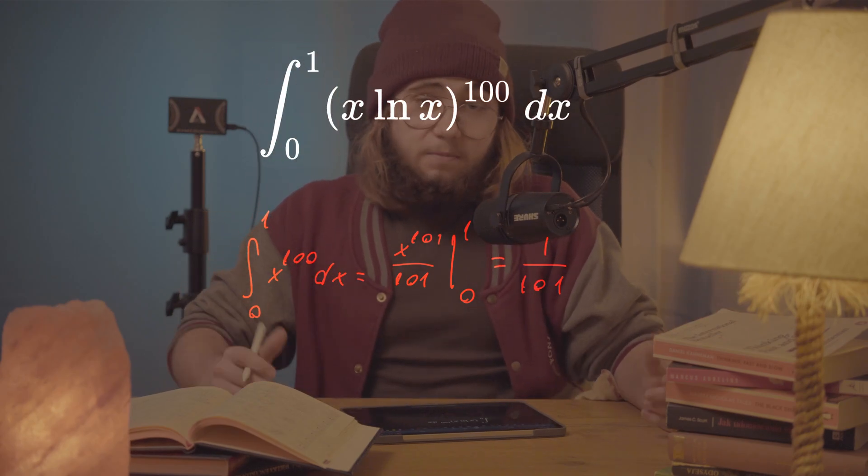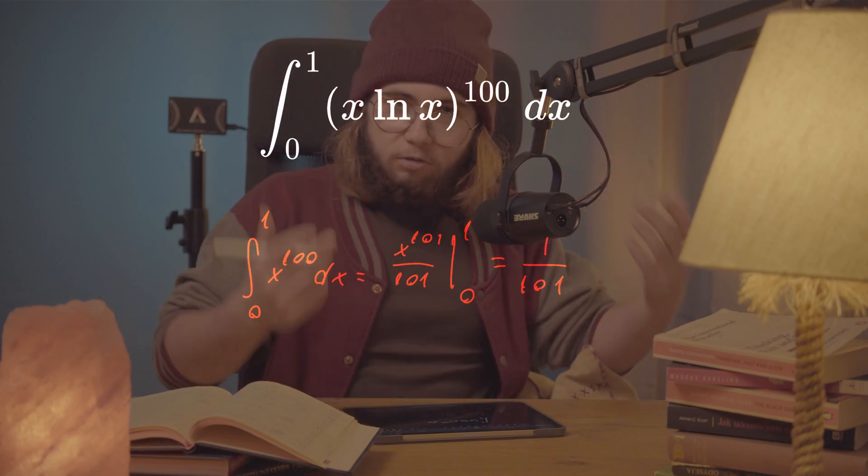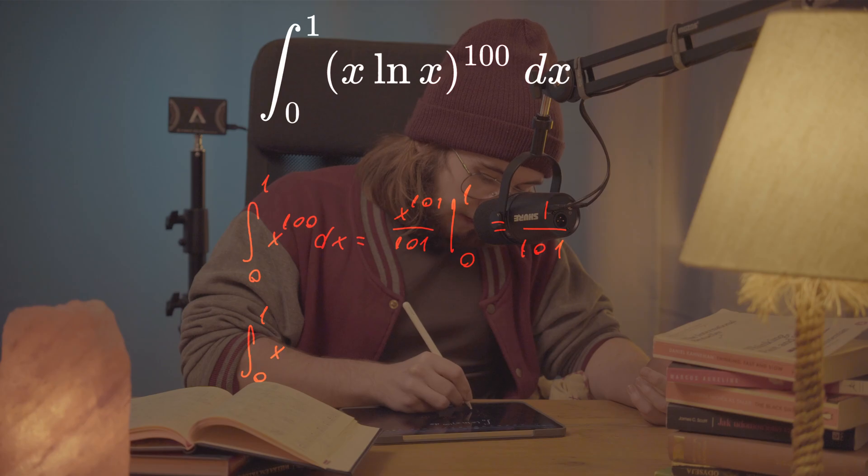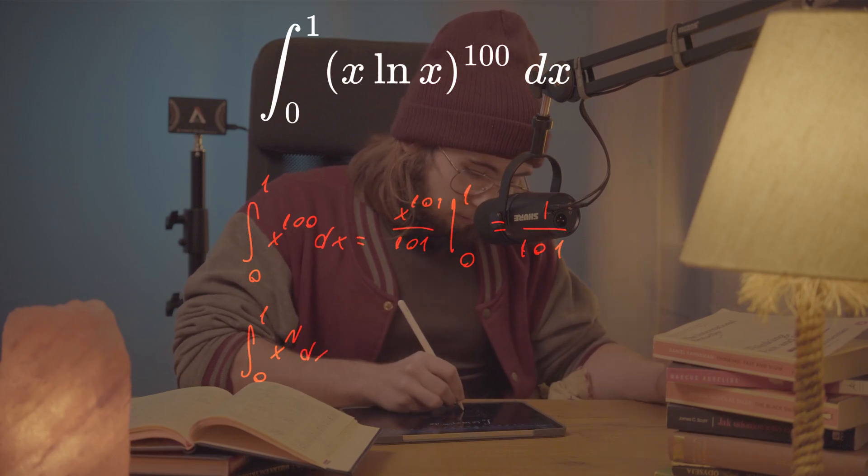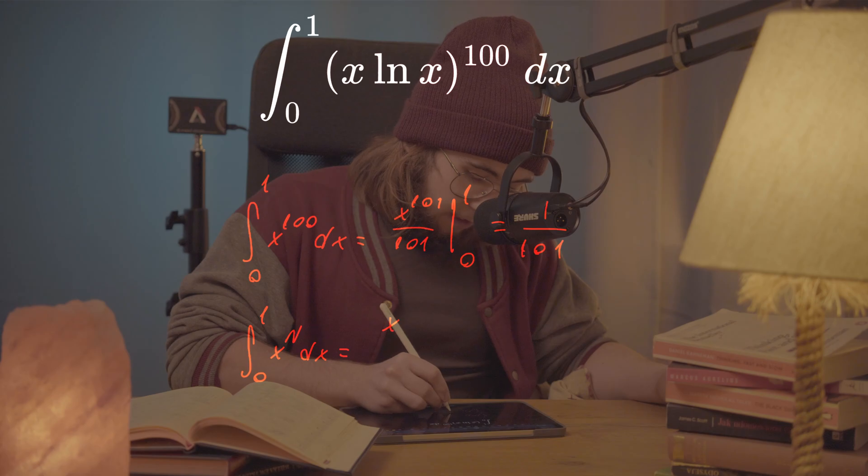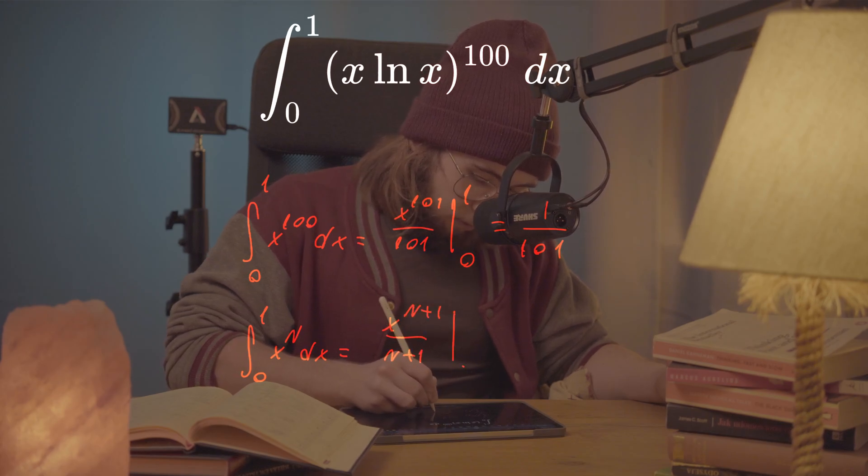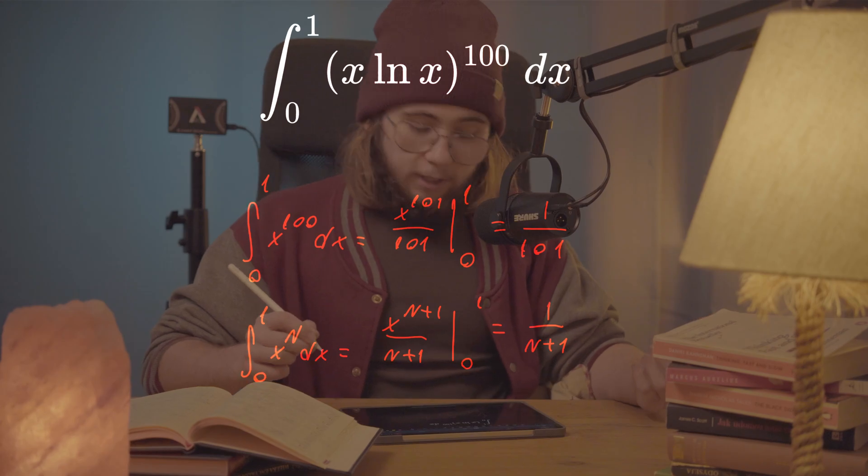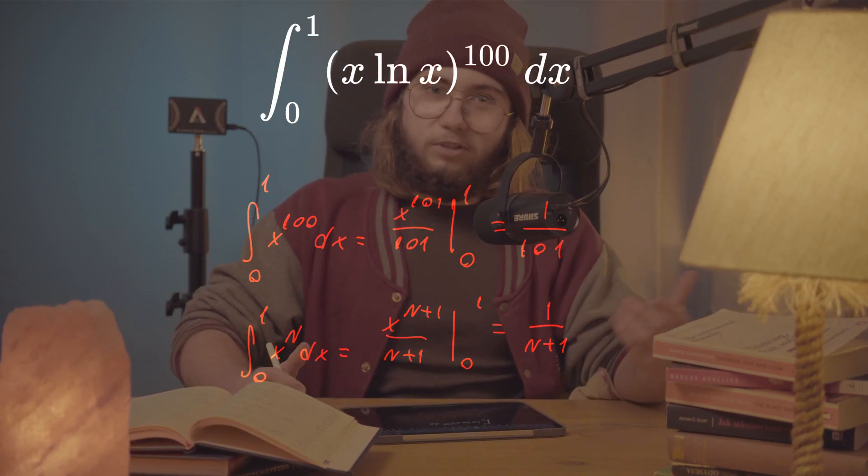We can actually generalize this to the integral from 0 to 1 of x to the power of n dx, which will be x to the n+1 divided by n+1 in the bounds of 0 and 1, which is just 1 over n+1. That's just the regular power rule combined with the integral from 0 to 1.